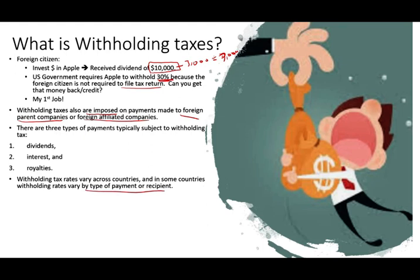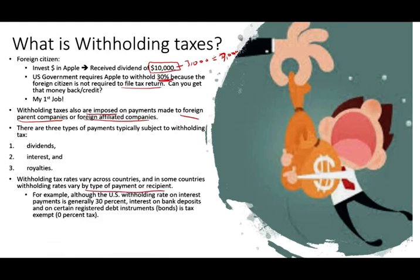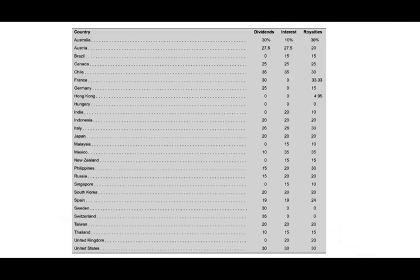Withholding rates may vary across countries, and in some countries they vary by the type of payment or the recipient — there is no one set rate. For example, in the U.S., the withholding rate on payments is generally 30% on interest on bank deposits, and 0% on certain registered debt instruments. The UK does not withhold anything on dividends. France does not withhold anything on interest payments, and neither does Germany.